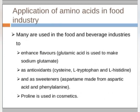The application of amino acids in the food industry. Amino acids are used in the food and beverage industries to enhance flavor, as antioxidants, and as sweeteners. Proline is also used in cosmetics. Certain microbes are used as sweeteners, as antioxidants, and to enhance flavor.